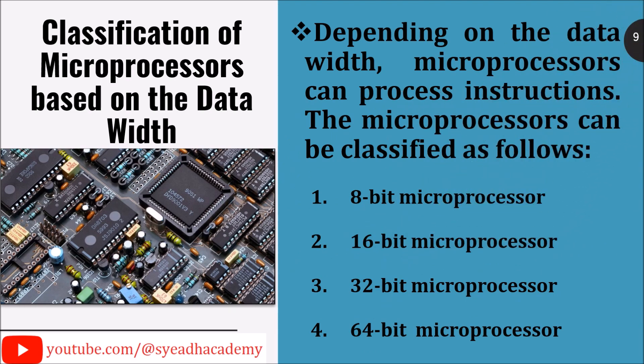Classification of microprocessors based on data width. Depending on the data width, microprocessors can be classified as follows: 1. 8-bit microprocessor, 2. 16-bit microprocessor, 3. 32-bit microprocessor, 4. 64-bit microprocessor.